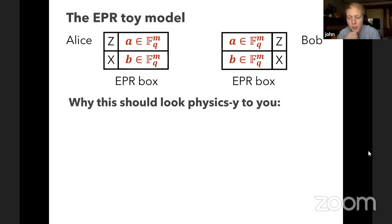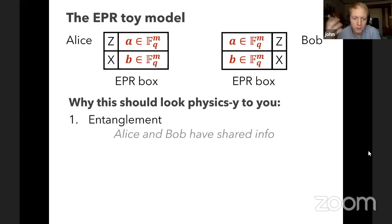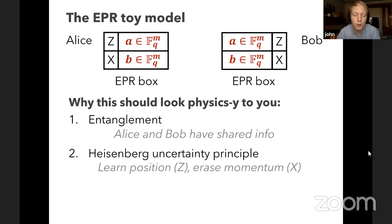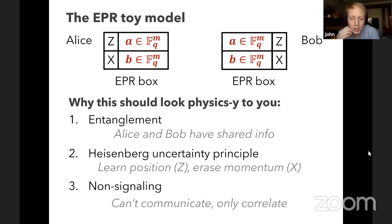This is a good model for entangled quantum states for several reasons. First, there's entanglement: Alice and Bob have shared information in their boxes. Second, it has a Heisenberg uncertainty principle aspect — if you learn Z information, you have to erase X information. Third, it's non-signaling, which is a property of quantum mechanics: they can use these boxes to correlate but can't use them to communicate.